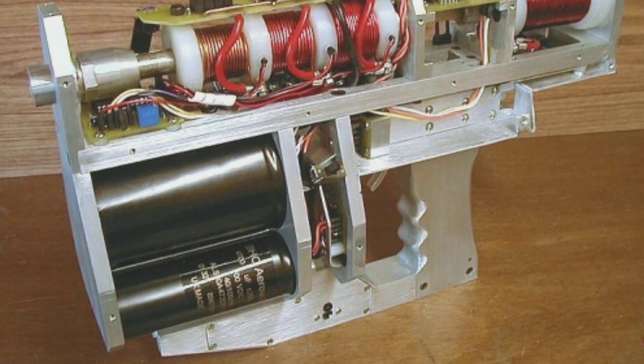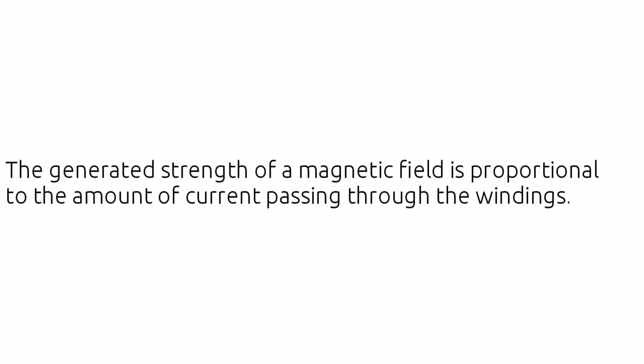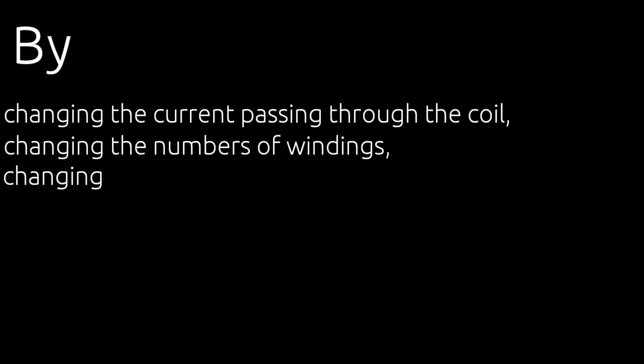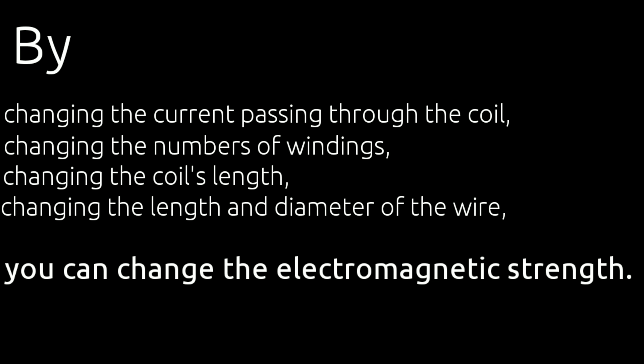You can make an electromagnet by winding insulated copper wire around a nail or similar object. The strength of the magnetic field is proportional to the amount of current passing through the windings. By changing the current, the number of windings, the coil's length, or the length and diameter of the wire, you can change the electromagnetic strength.